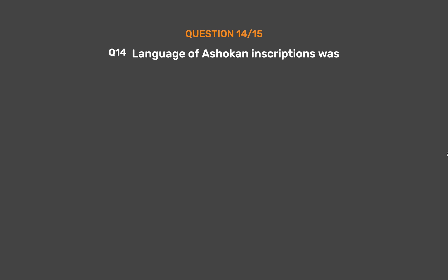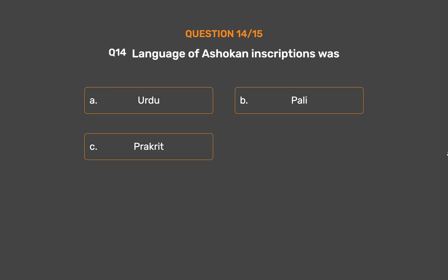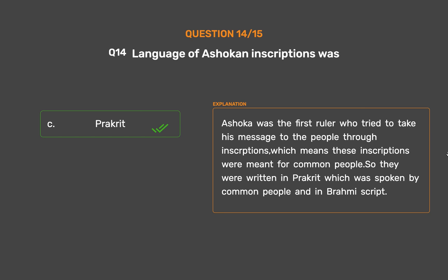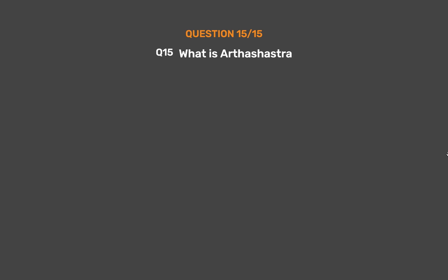Question No. 14. The language of Ashoka's inscriptions was: Option A: Urdu. Option B: Prakrit. Option C: Sanskrit. The correct answer is Option C: Prakrit. Ashoka was the first ruler who tried to take his message to the people through inscriptions, which means these inscriptions were meant for common people. So they were written in Prakrit, which was spoken by common people, and in Brahmi script.